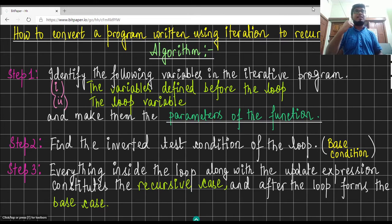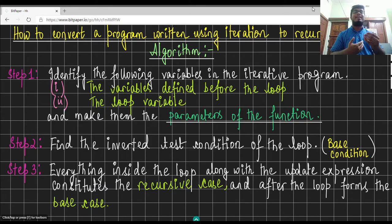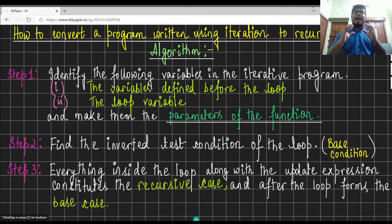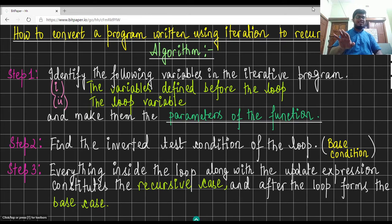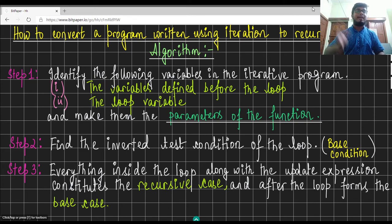In step 1, our first task is to identify the variables which have been declared before the loop as well as the loop variable. After we have identified these variables in our iterative function, we can add these variables to the parameter list of the recursive function. Let us understand what I mean by this step.